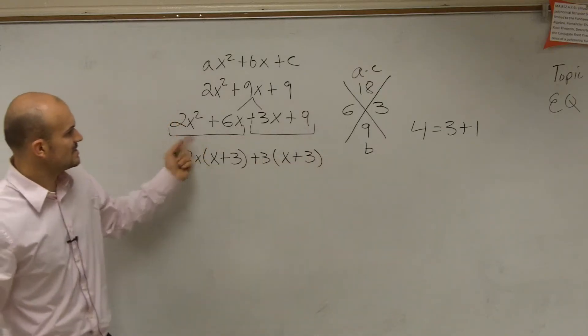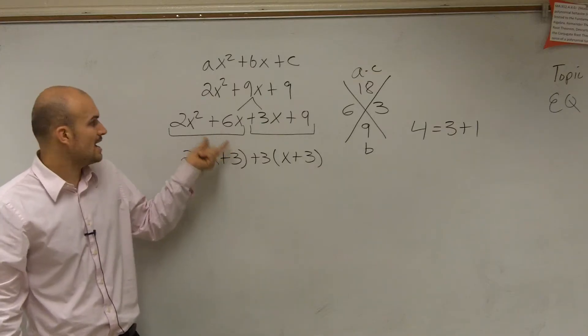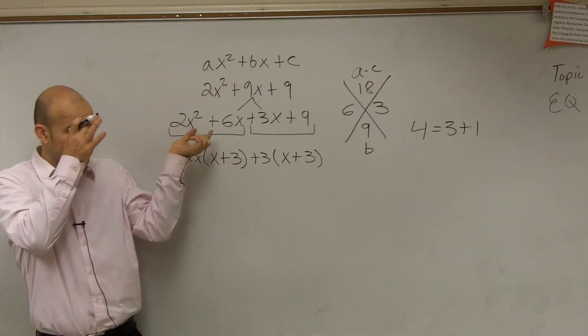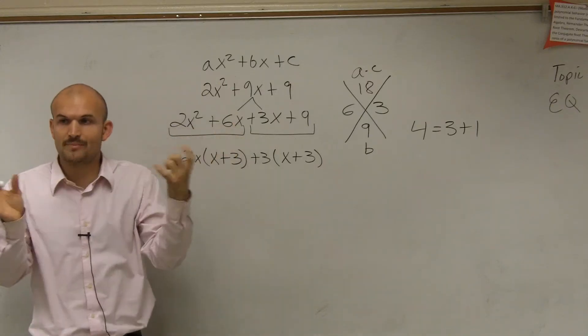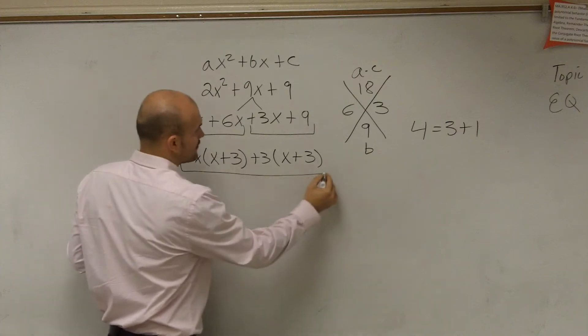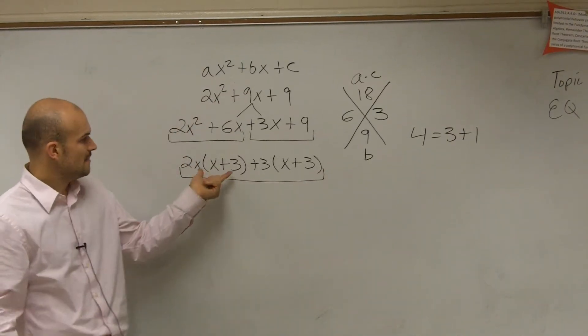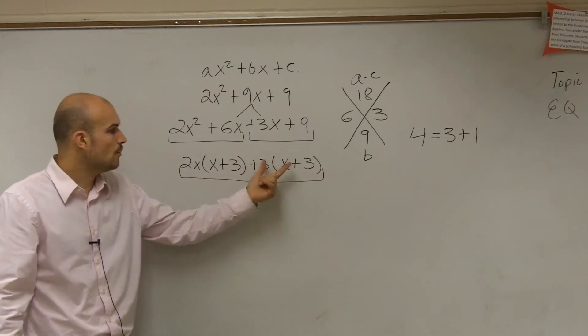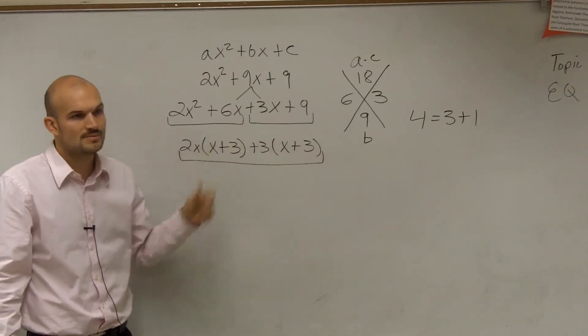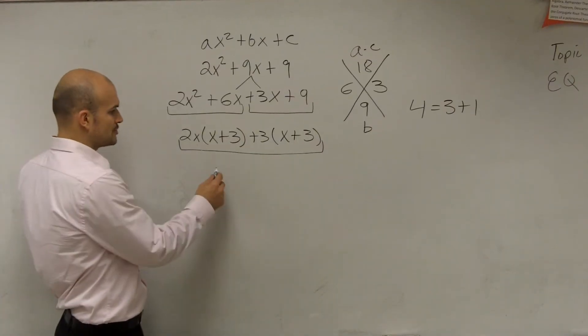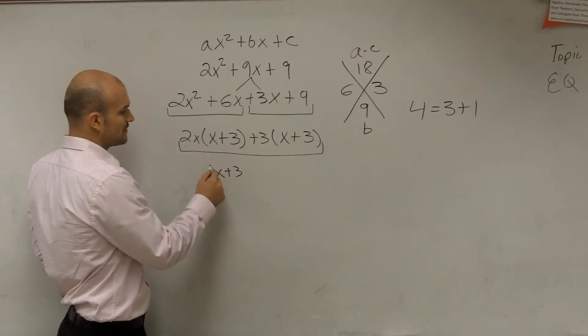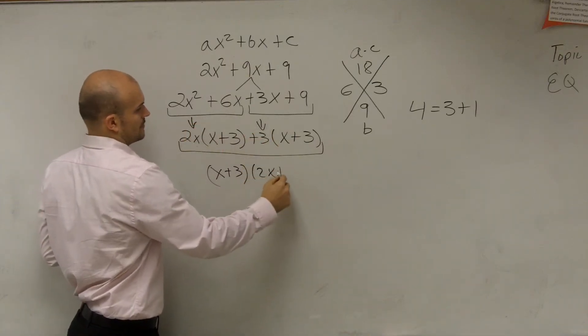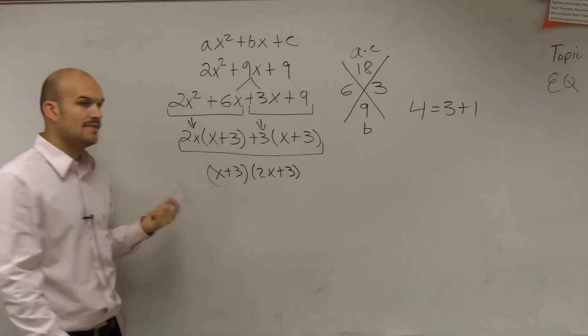Now, what you guys notice is in this bracket here, I have two terms. This whole expression is a term and this whole expression is a term. So what do these two terms share in common? X plus 3. So you factor out an X plus 3 and you're left with... And there you go.